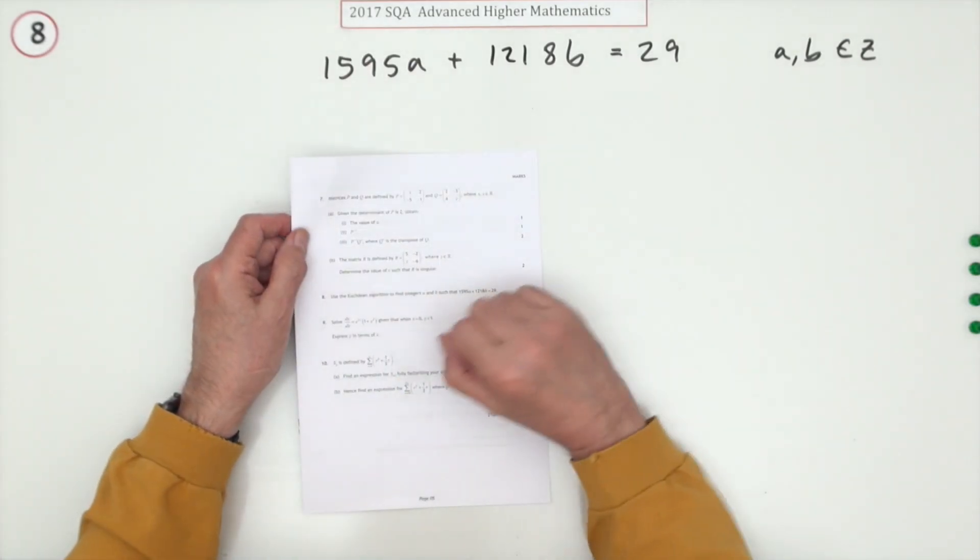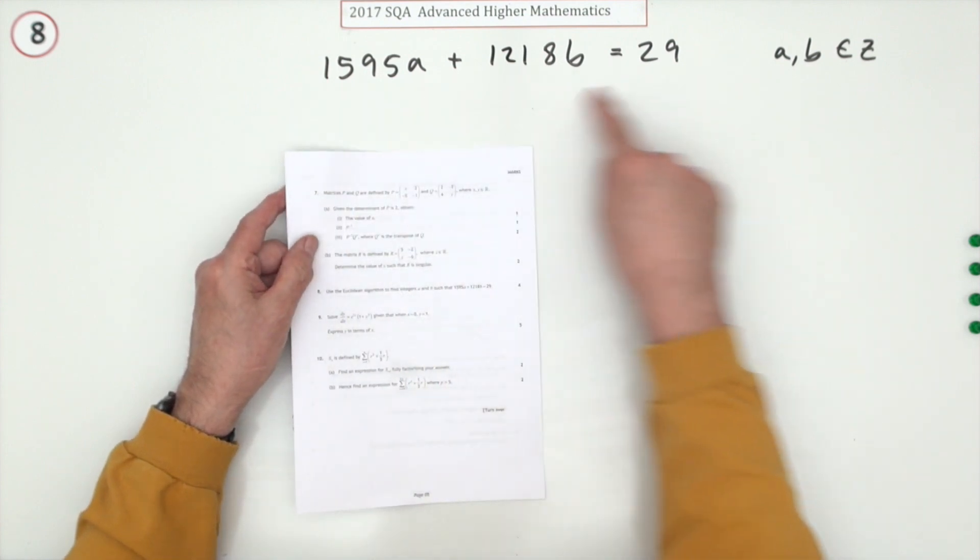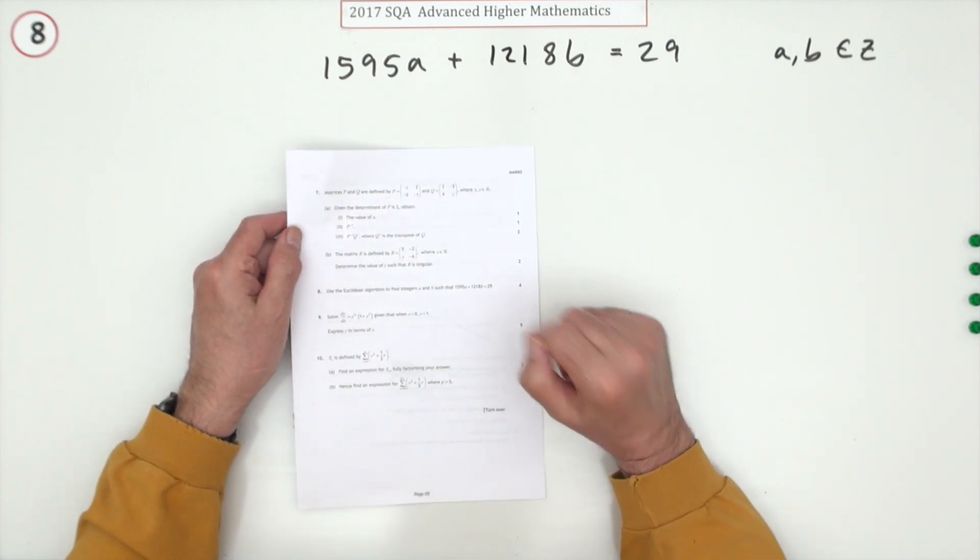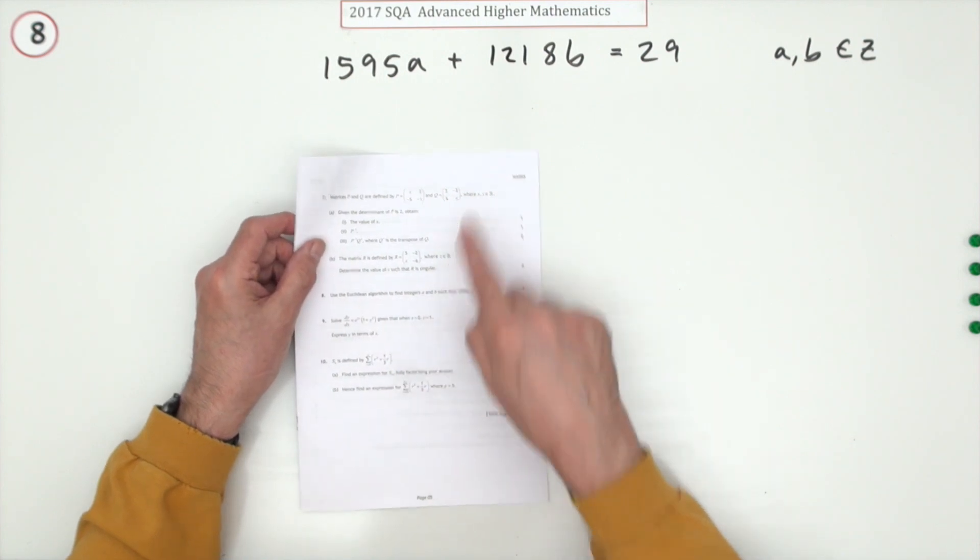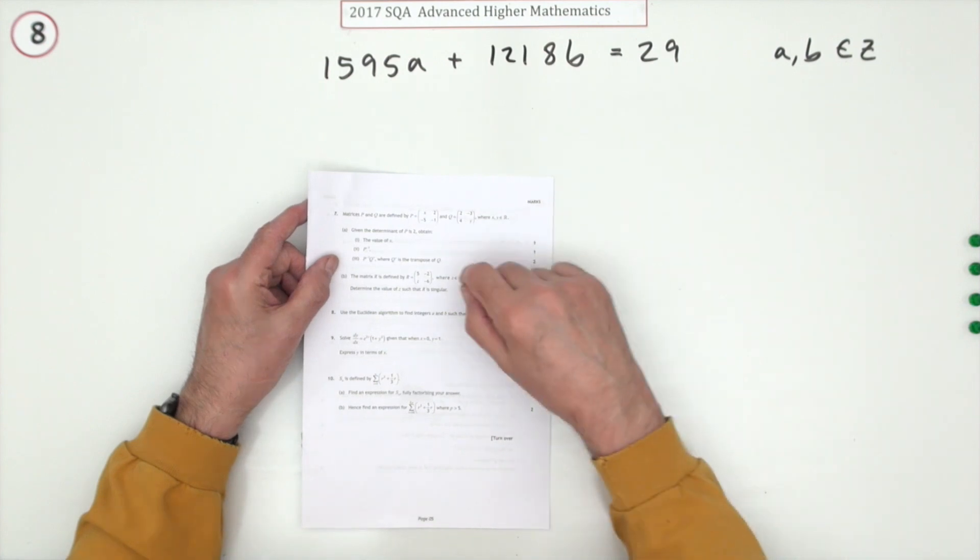Number eight from the 2017 Advanced Higher Maths. You're given a Diophantine equation and it says use the Euclidean algorithm to find integers a and b such that they form a solution to that equation.